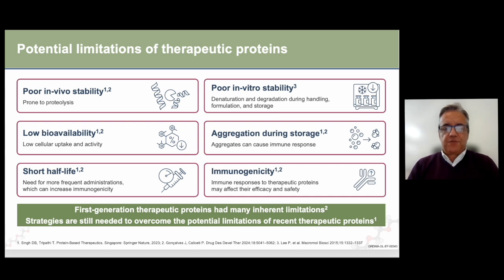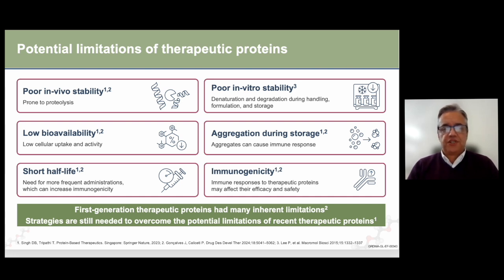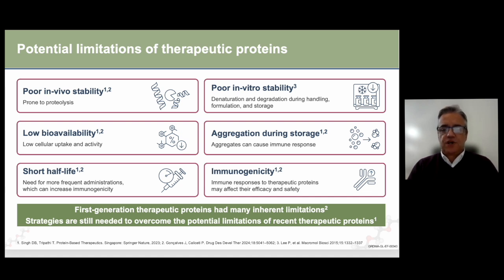Despite these benefits, therapeutic proteins face challenges like immunogenicity, short half-life, and instability. Poor in vitro stability, low bioavailability, short half-life, and aggregation during storage and production can all have an impact on immunogenicity. These issues limit their efficacy and require innovative solutions like pegylation.